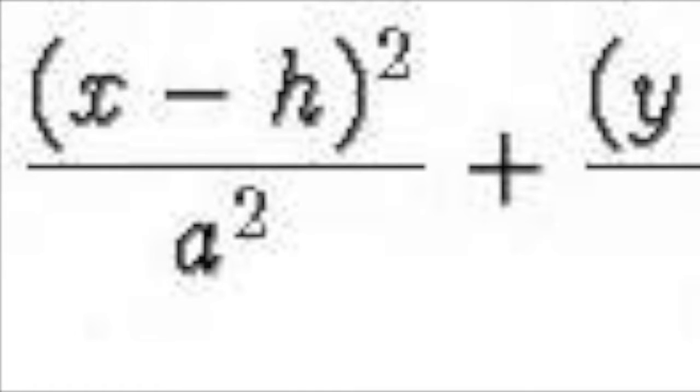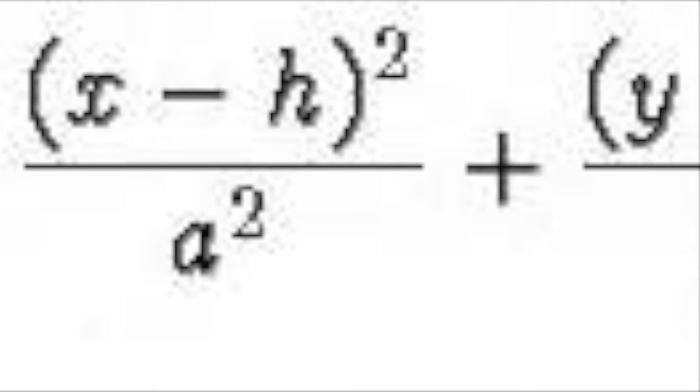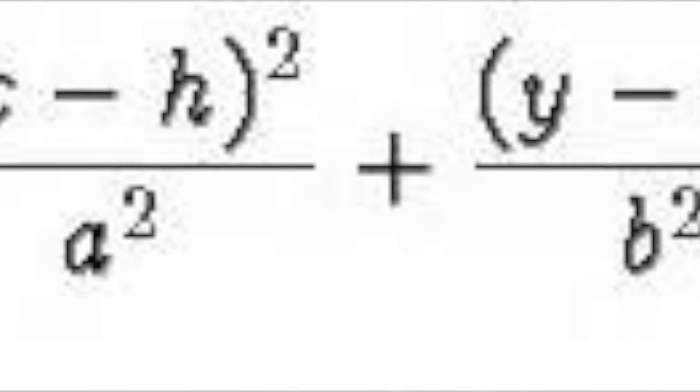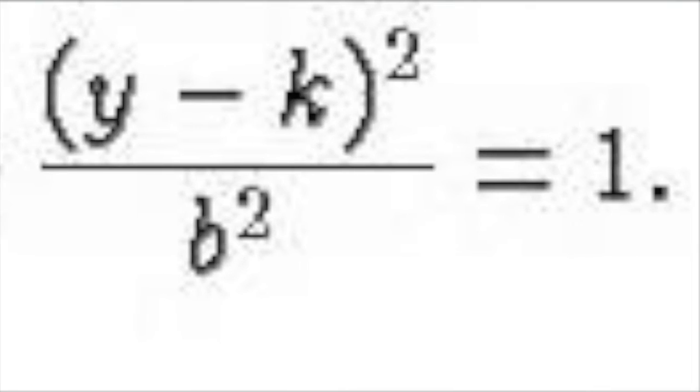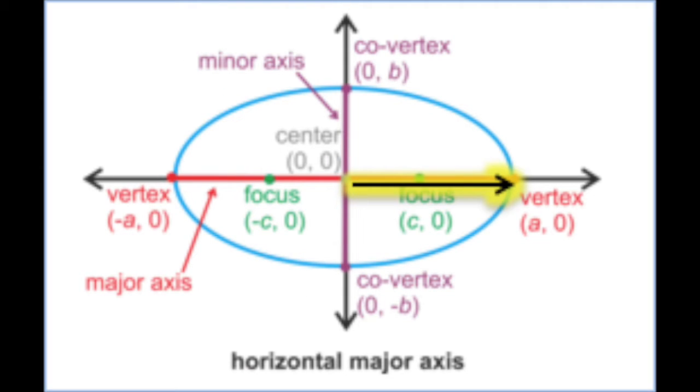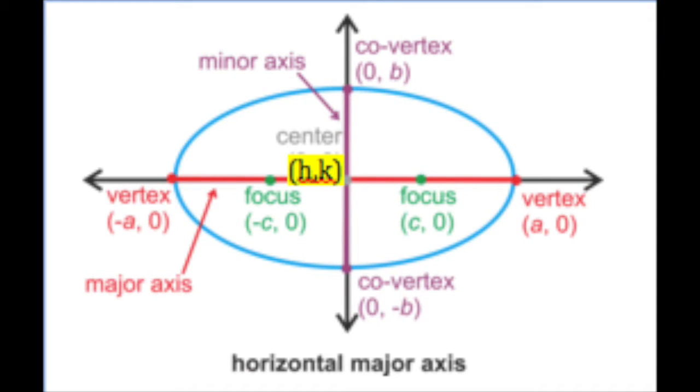The equation of an ellipse is x minus h squared divided by a squared plus y minus k squared divided by b squared equals 1. Where a is the distance from the center to the vertex, b is the distance from the center to the co-vertex, and h k is the center.